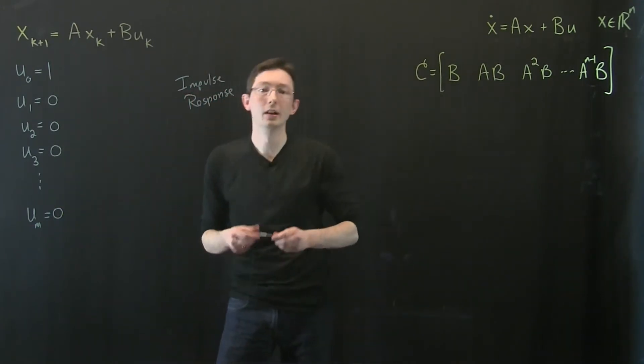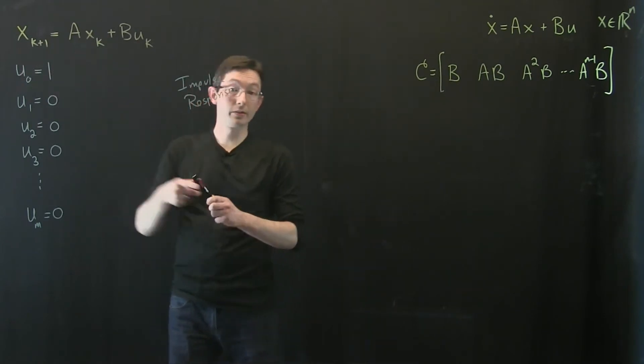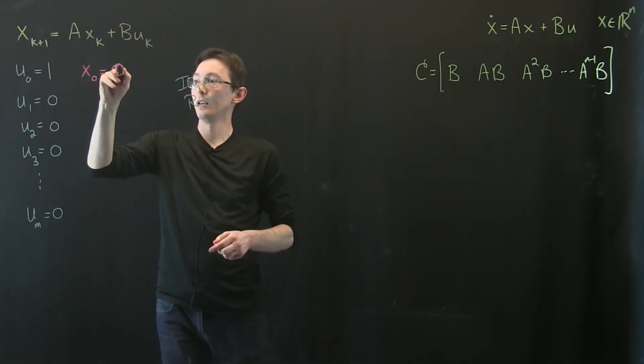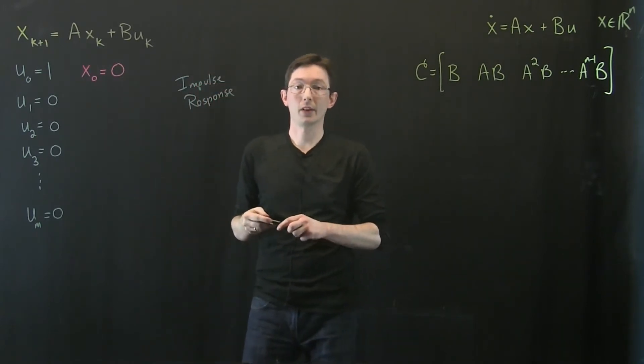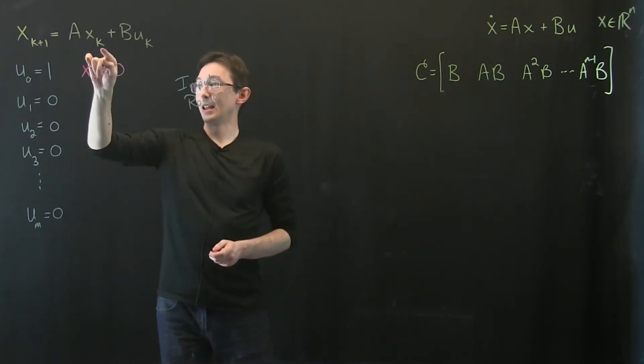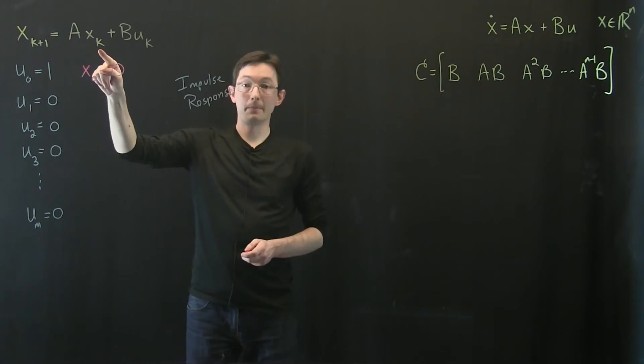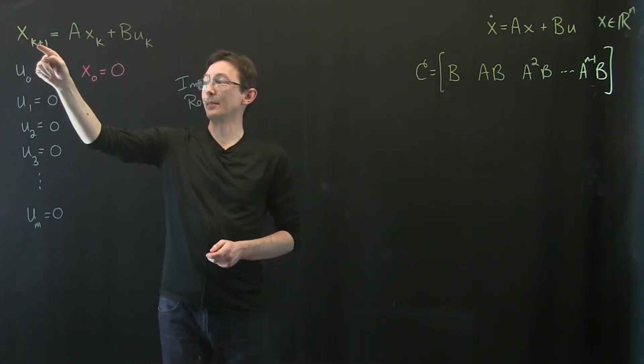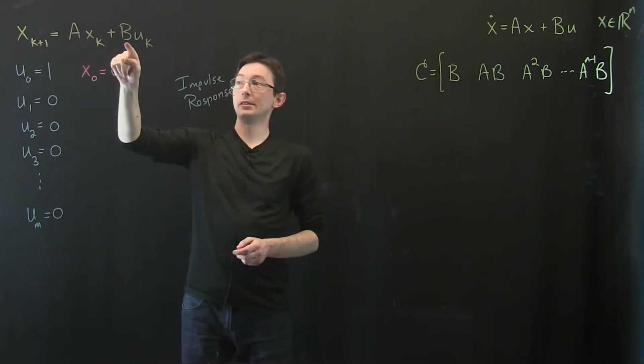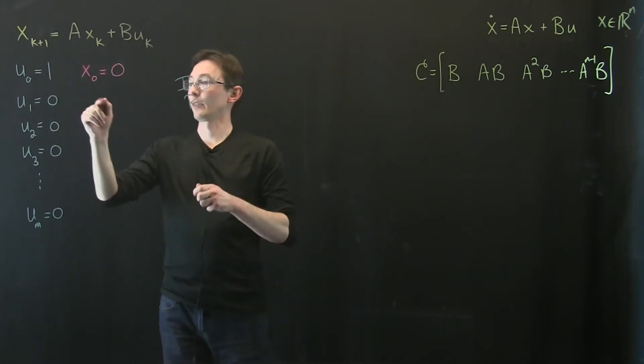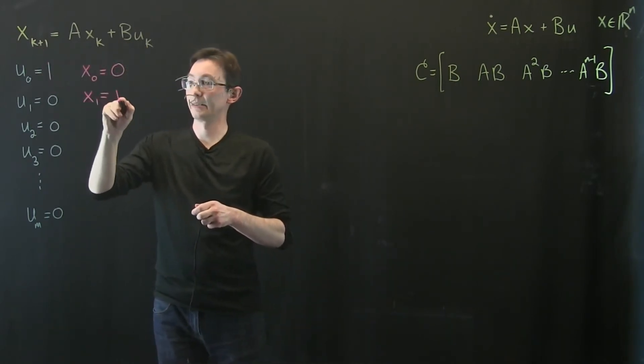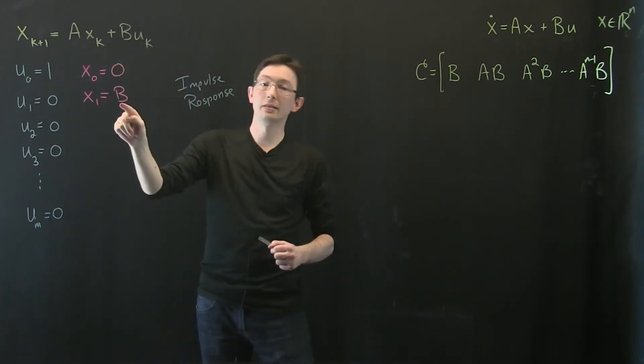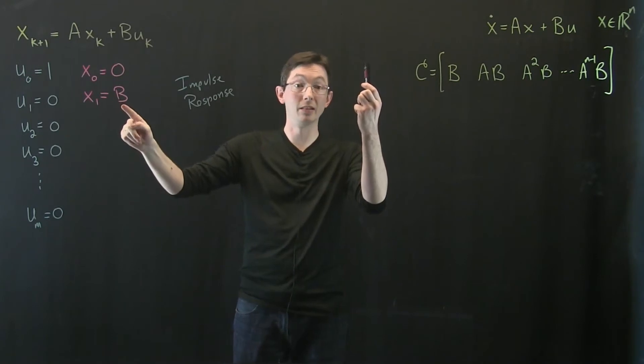And then what I'm going to do is I'm going to measure how that rings through the system. Okay so I'm also going to start with an initial condition x0 of 0. Okay and so at x at time 0 is 0 and u at time 0 is 1. Then x at time 1 is just b times 1. So x1 is just b, it's the vector b. So this is an impulse in u is a lot like an initial condition in the b direction.